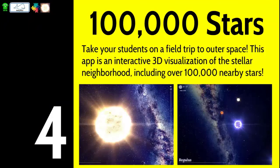Number four is 100,000 Stars. It's exactly what it sounds like — we're taking a look at our observable universe through the lens of a planetarium. It's an interactive 3D visualization of the stellar neighborhood, including over 100,000 nearby stars. You can move it around and see 3D representations of those stars and constellations. It'll really hook your kids, especially if you're talking about astronomy in science class or doing a lesson on space.